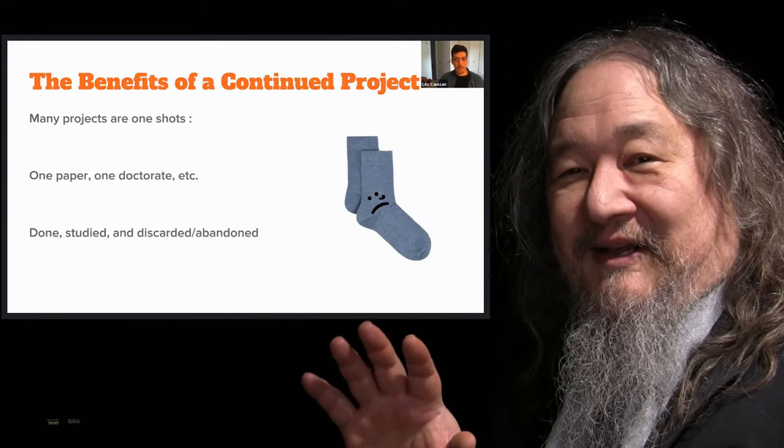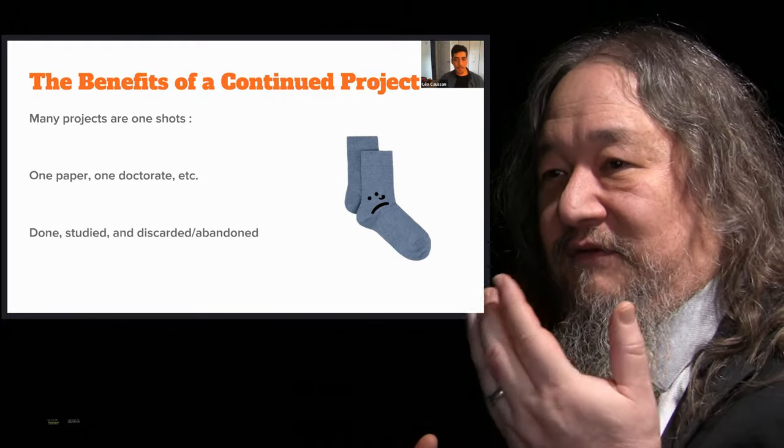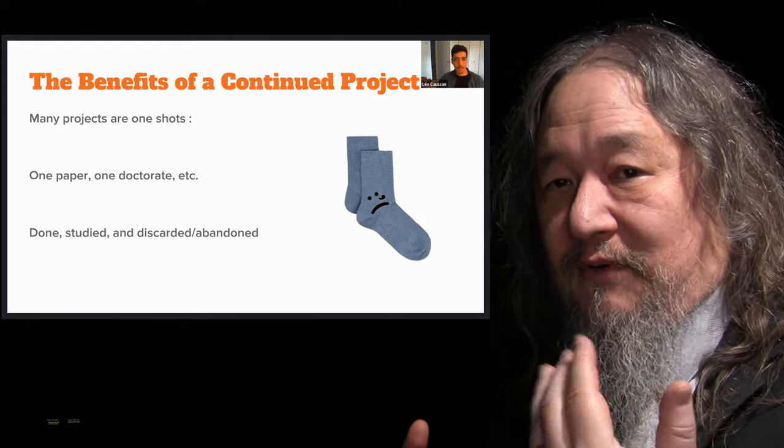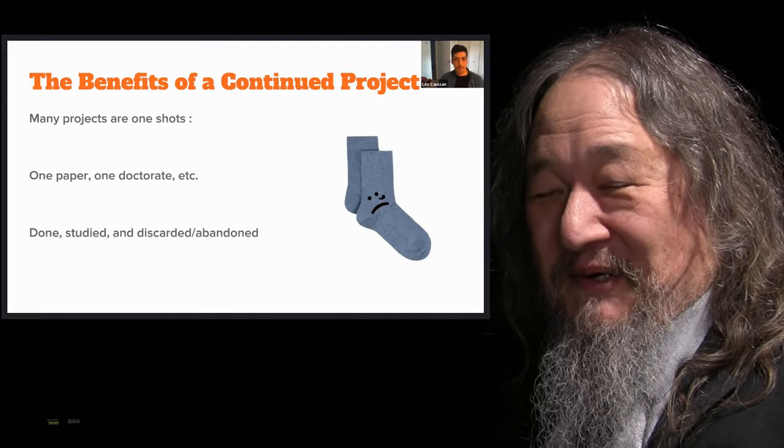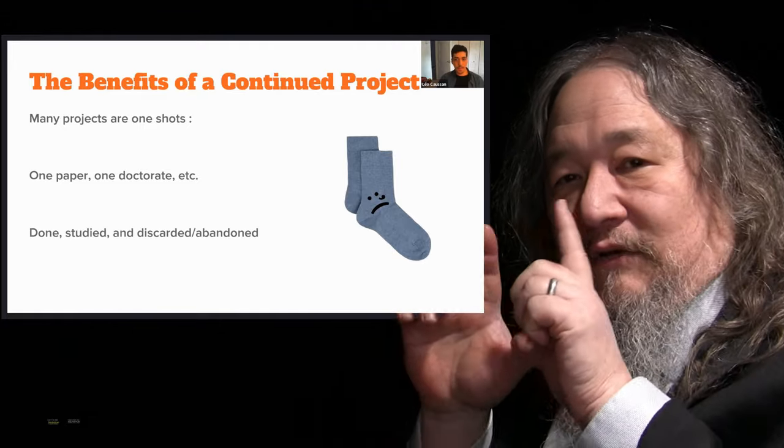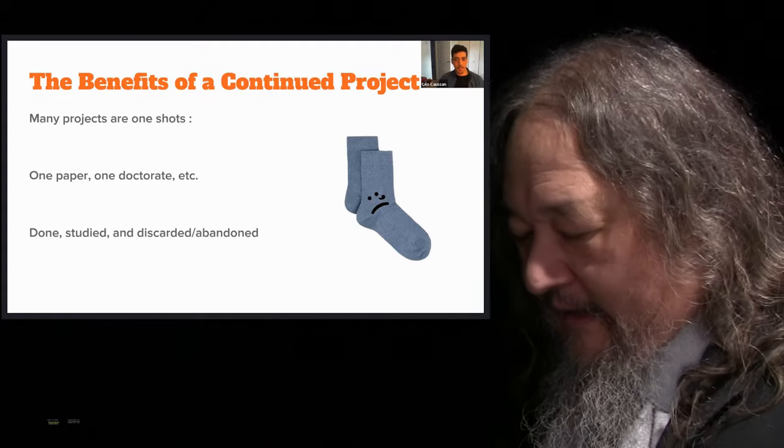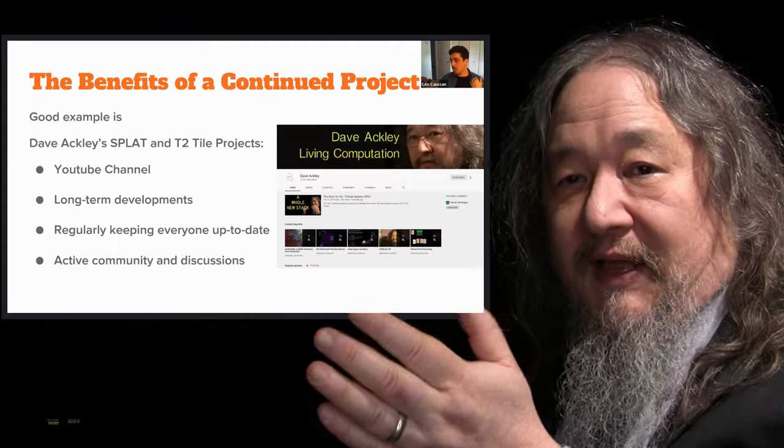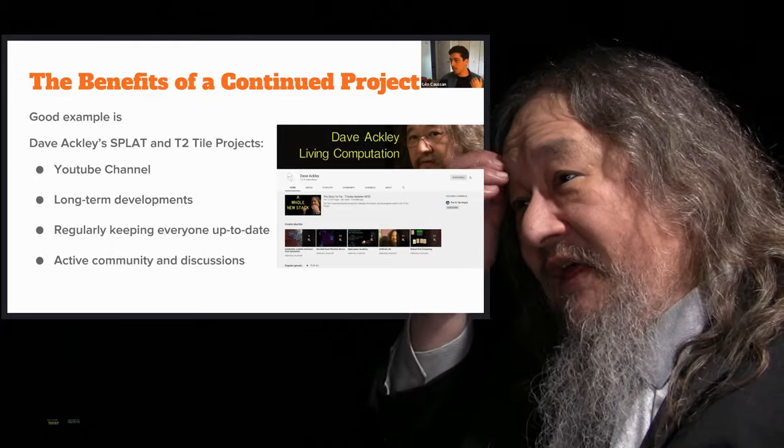He kind of stressed the idea of having it being an ongoing thing versus the sort of one and done, one paper, one thesis, and so forth, which I really agree is a problem with artificial life. You get these single starts that explore one idea and then poof, they're gone. And he calls out Splat and the T2 Tile Project as examples of things that are ongoing. Thank you.